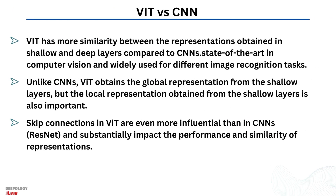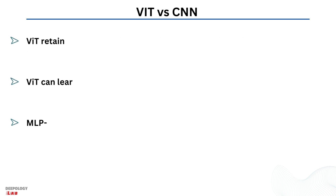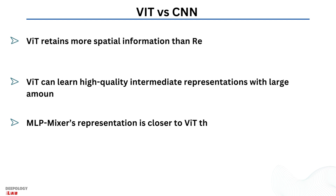The ViT model represents an input image as a series of image patches — like the series of word embeddings used when applying transformers to text — and directly predicts class labels for the image. Vision Transformer has been gaining momentum in recent years. Key differences between CNN and ViT: First, ViT has more similarity between representations obtained in shallow and deep layers compared to CNNs. Second, unlike CNNs, ViT obtains global representation from shallow layers, though local representation is also important. Third, skip connections in ViT are more influential than in CNNs and substantially impact performance. Fourth, ViT retains more spatial information than ResNet. Fifth, ViT can learn high-quality intermediate representations with large amounts of data. Sixth, MLP Mixer's representation is closer to ViT than to ResNet.